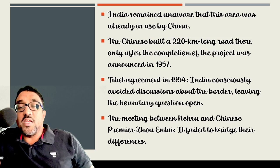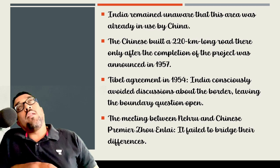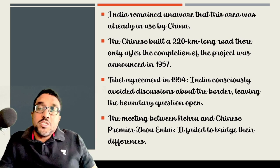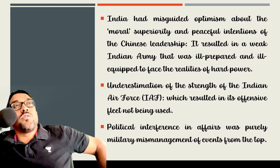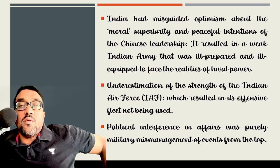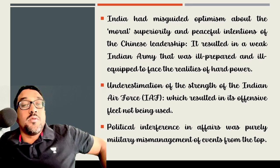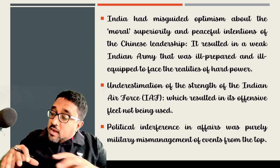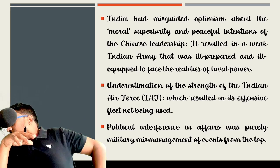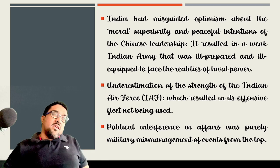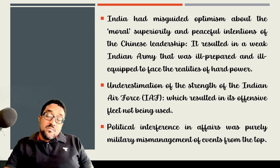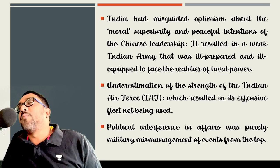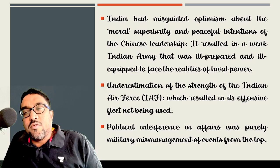The meeting between Nehru and Chinese Premier Zhou Enlai even in the 50s failed to resolve the dispute, because the border question was vague and India and China never really took serious attempts to discuss and resolve the issue. India was basically misguided by the optimism shown by the Chinese about the moral superiority and peaceful intentions of Chinese leadership. China, time and again back in the 50s and 60s, highlighted its intentions of peace — but it is only later we realized that China had an intention of peace but never the attitude of actually keeping peace.